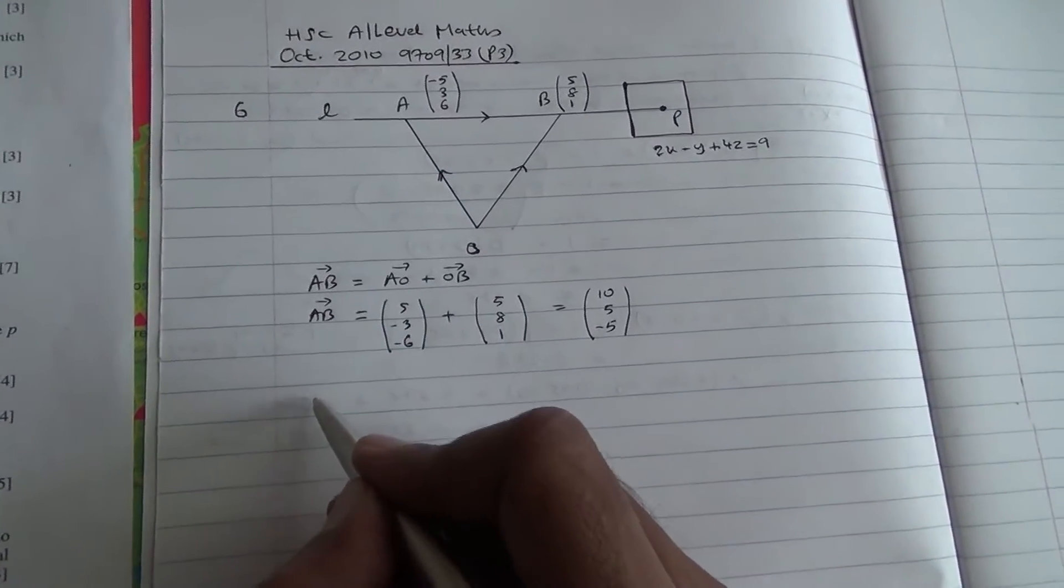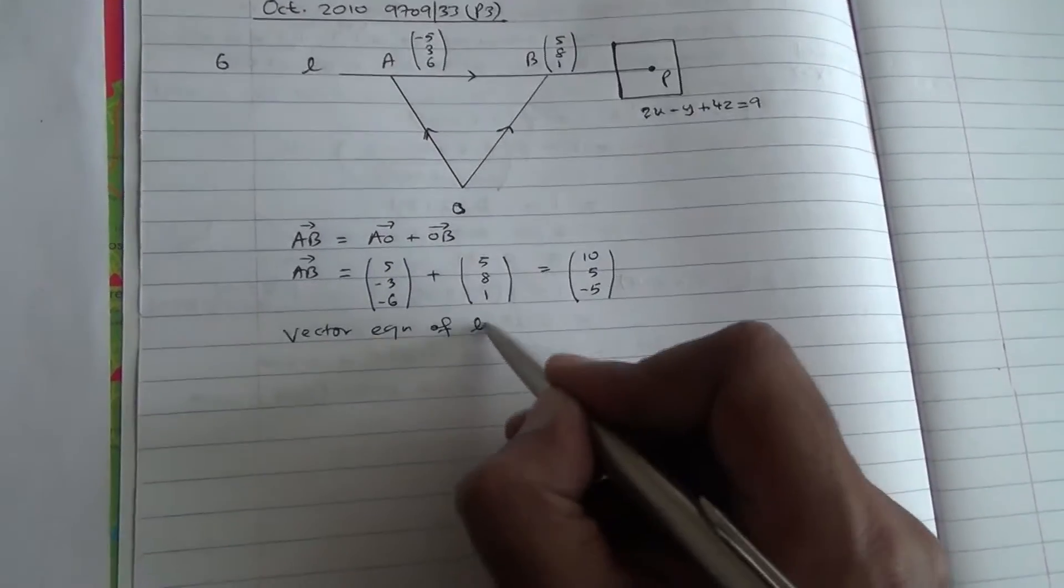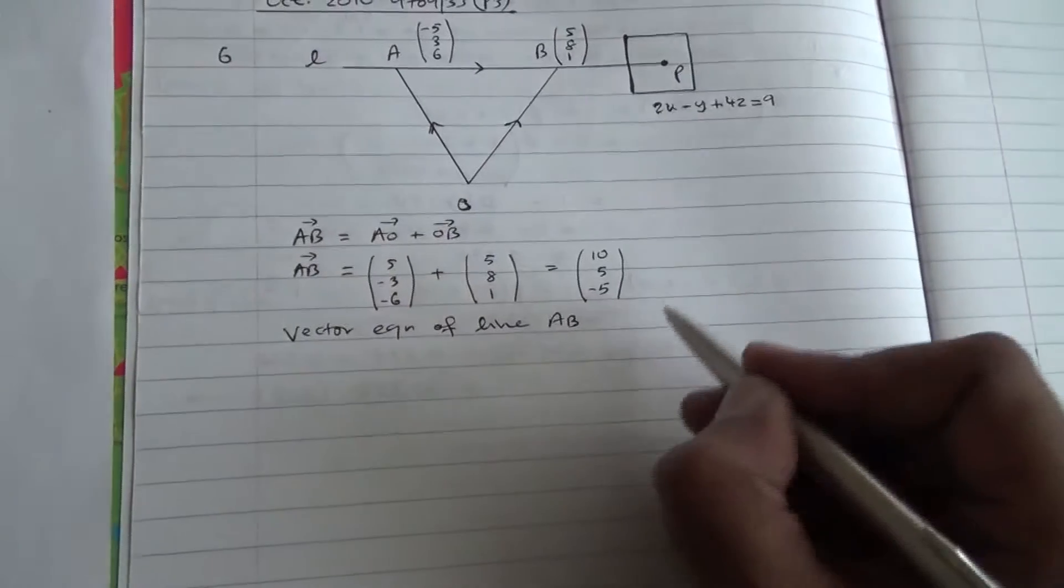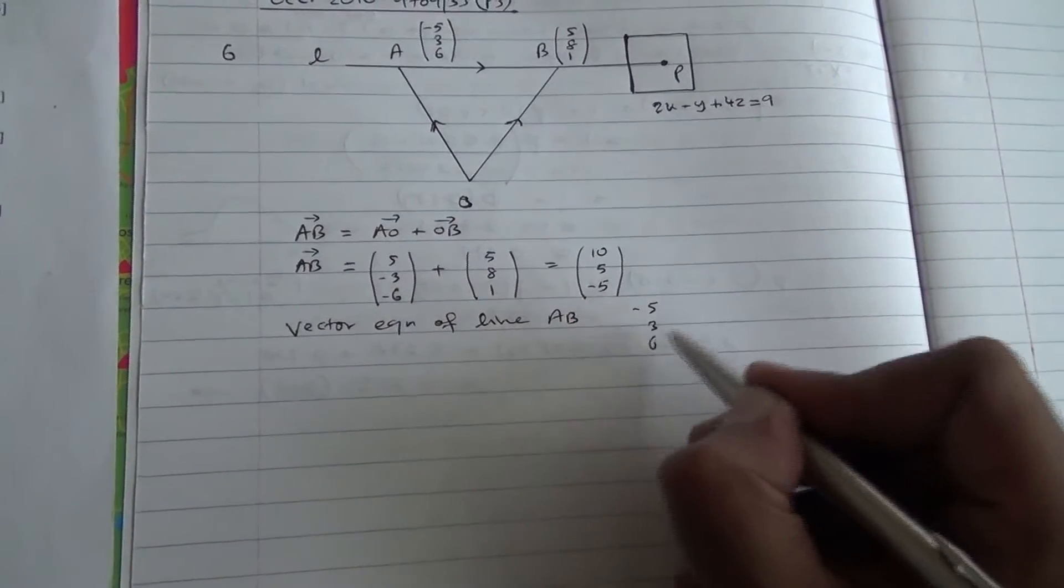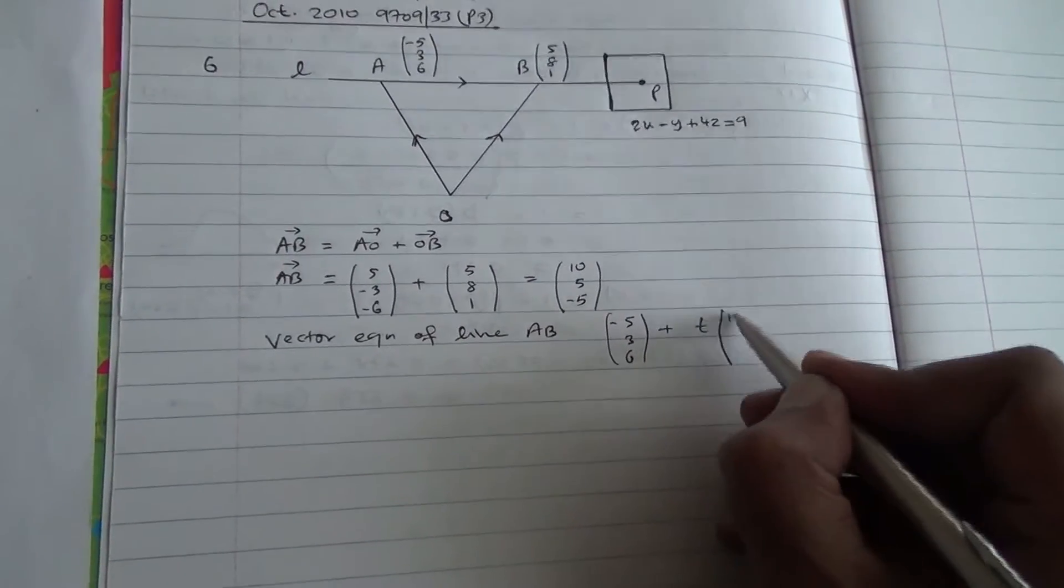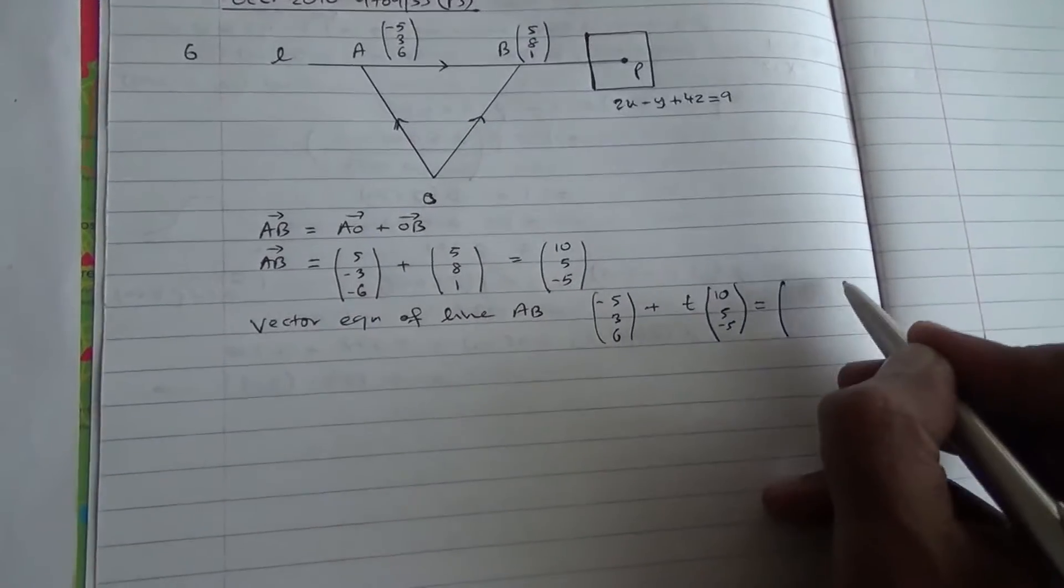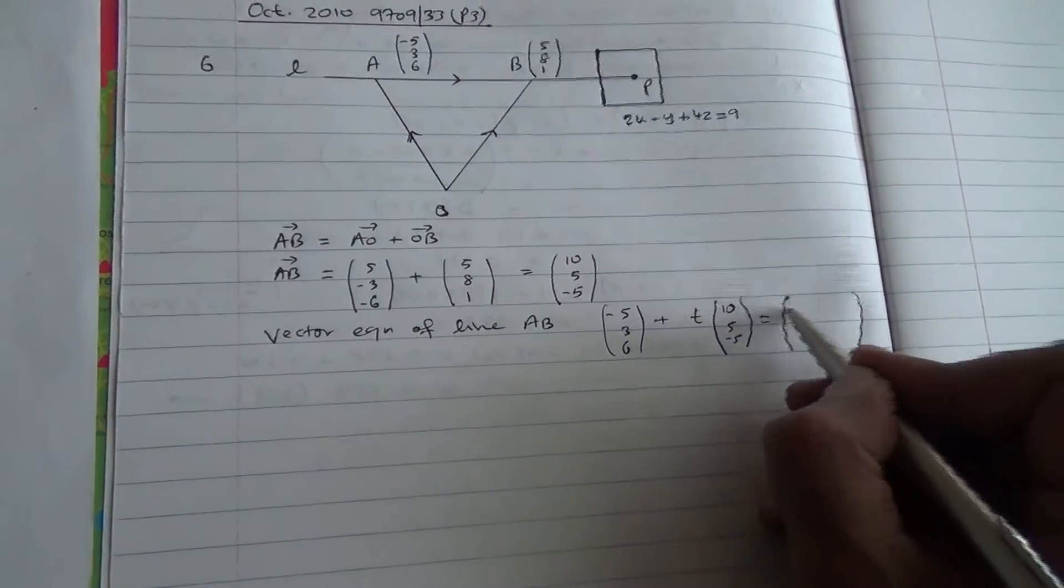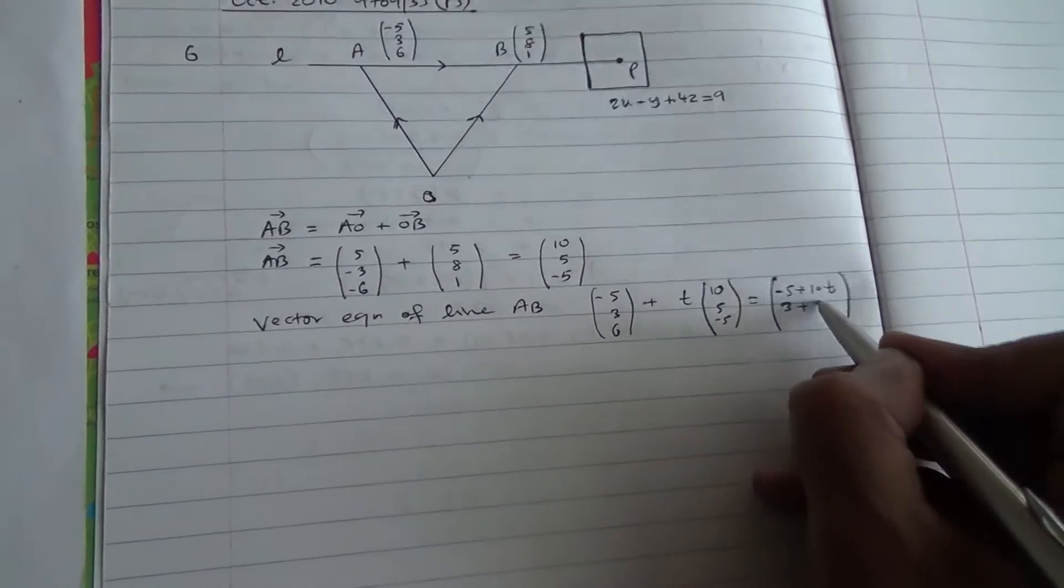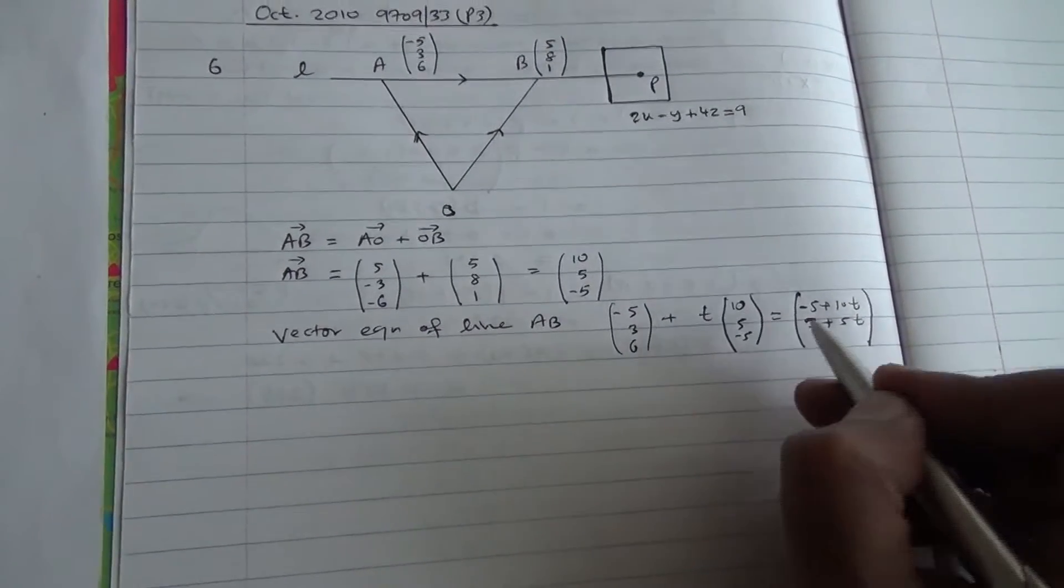Okay, so the vector equation of line AB or line L is going to be the point (-5, 3, 6) plus T times the vector AB, which is (10, 5, -5). And that's going to give us (-5 + 10T, 3 + 5T, 6 - 5T).